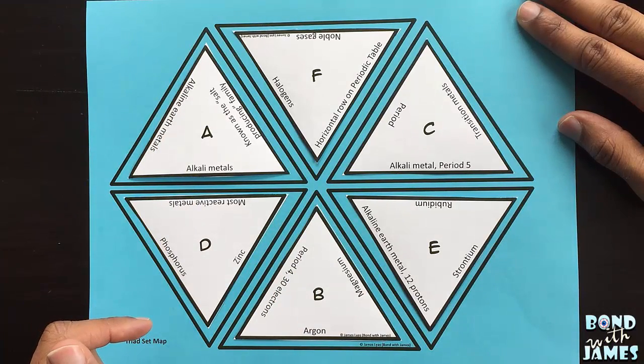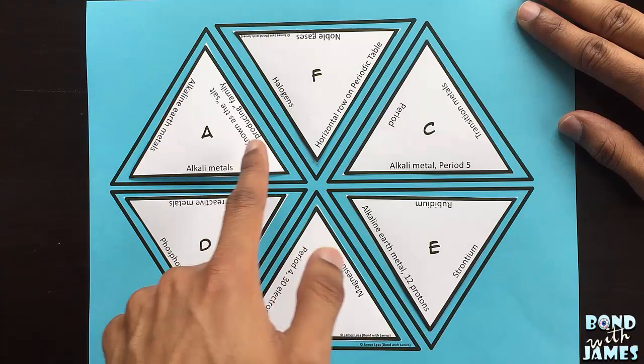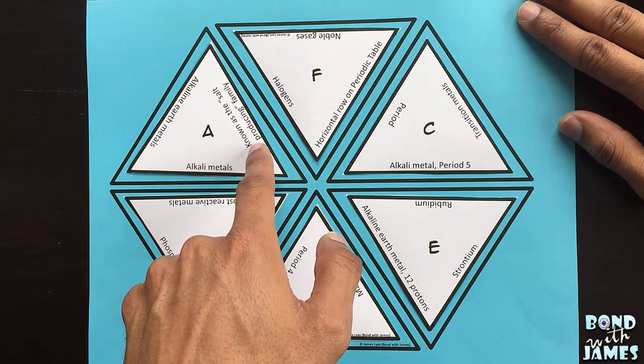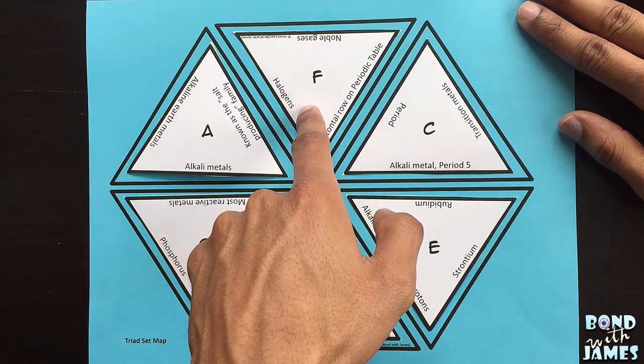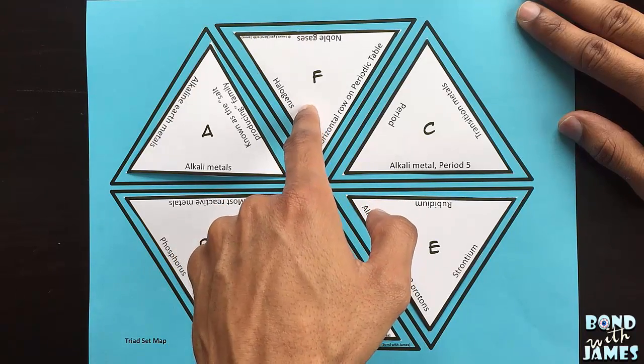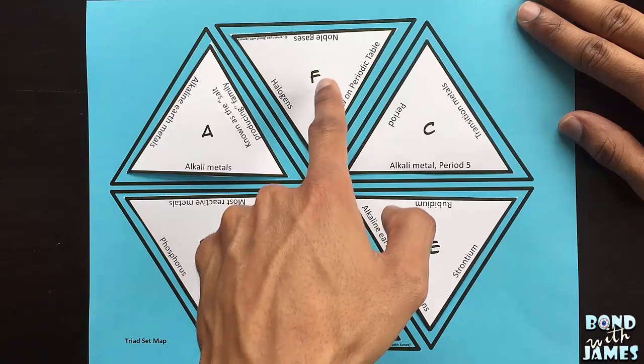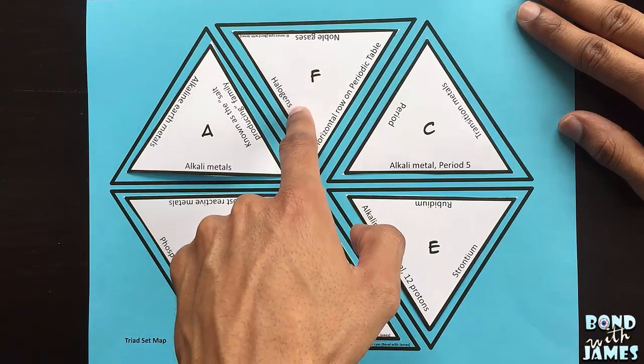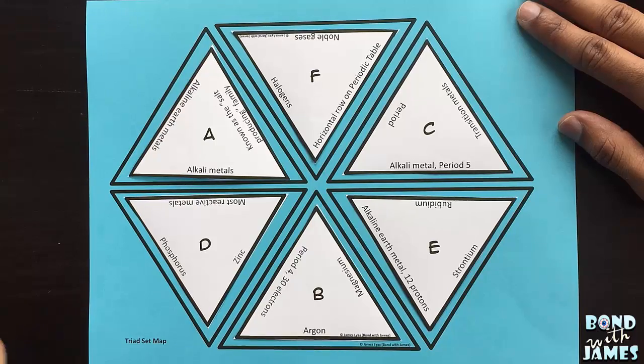Now the object of this puzzle set is for students to place a clue on one piece to a clue on a corresponding piece that matches up with it. So for example, piece F has halogens on it, piece A has known as the salt producing family.